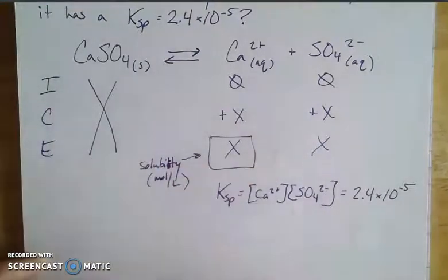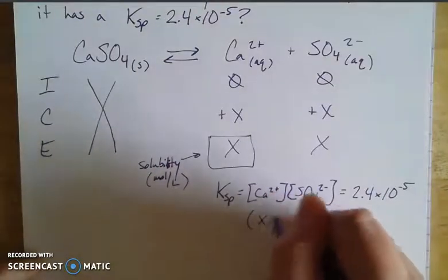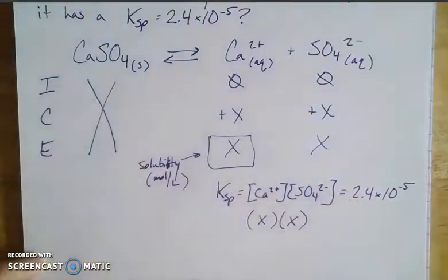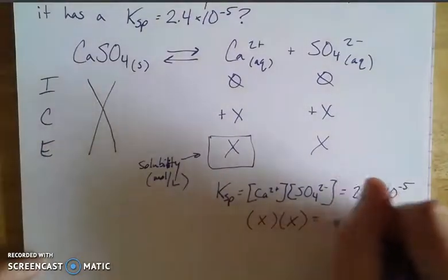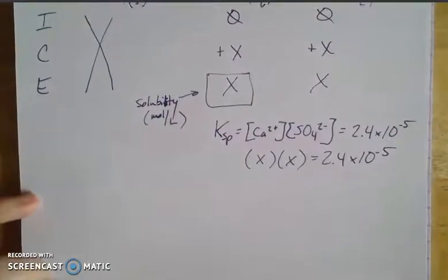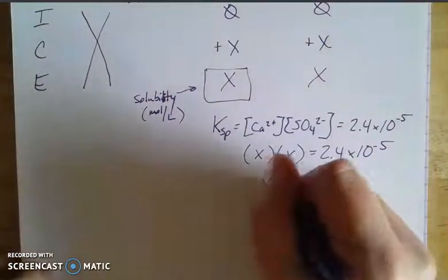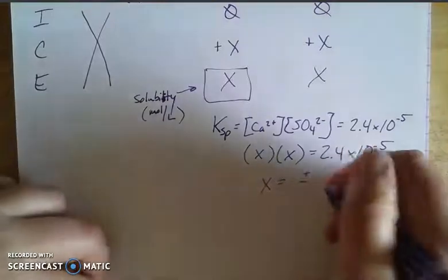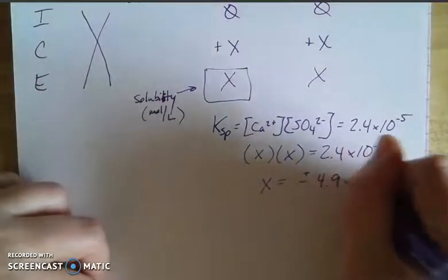And now we know that at equilibrium, we have X of each of my ions because it's one to one. So X squared is equal to my 2.4 times 10 to the negative fifth. And when I take the square root of both sides, then I end up with X is equal to plus or minus 4.9 times 10 to the negative third.